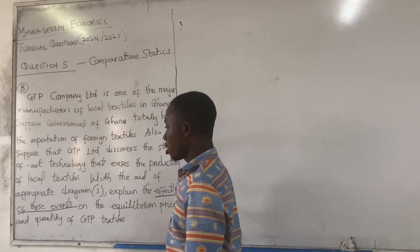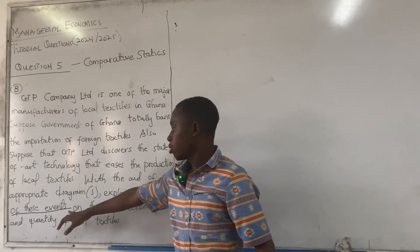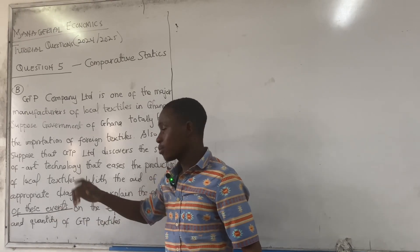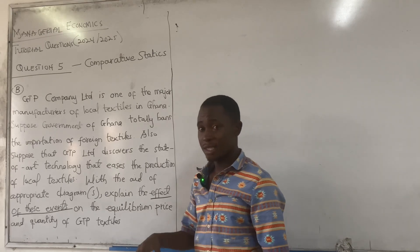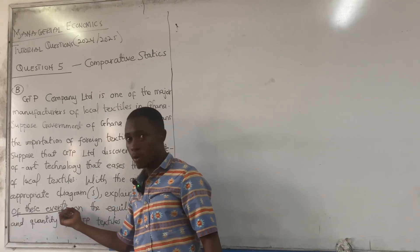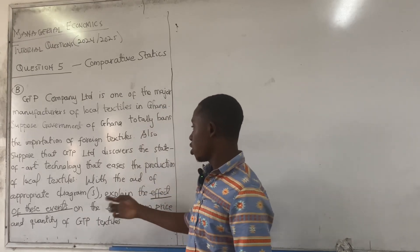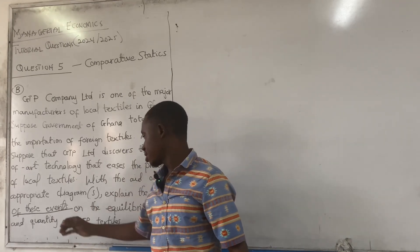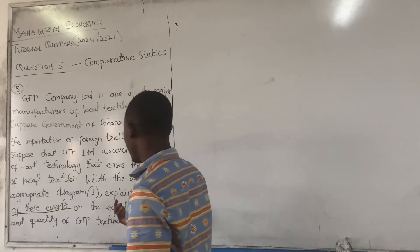Meaning that it's not one or two events — it's more than two, because we are having events, not just one. With the previous question, it was just one event. But this one is events — more than one. So with the aid of appropriate diagrams, explain the effects of these events on the equilibrium price and quantity of GTP textiles.